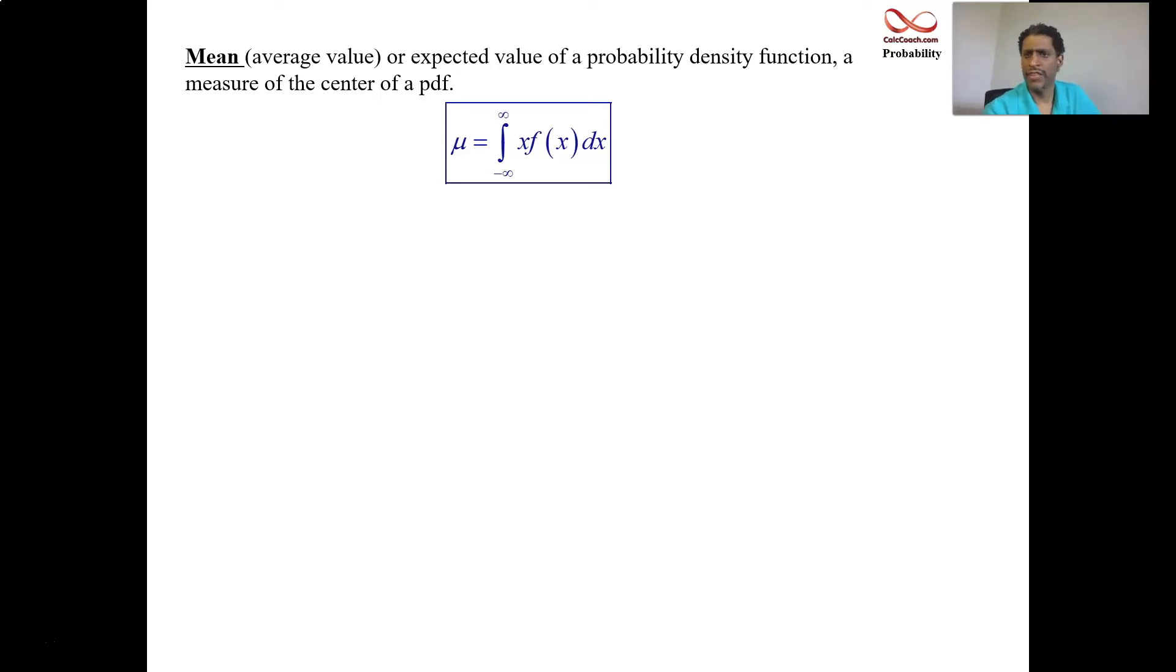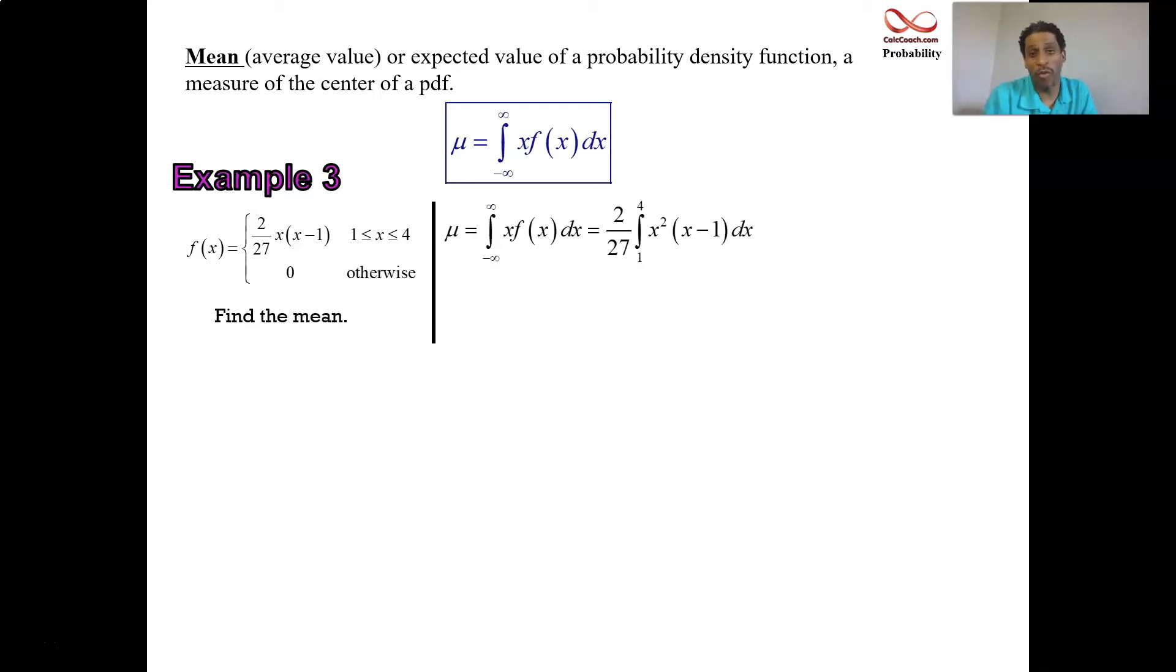Officially in this series, this is example number three. And it is going back to example number one and now calculating the mean for it. Example number one was just showing that this was a probability density function. Now our job is to calculate the mean for this probability density function. It's straightforward. We take this function, we multiply it by x. Technically, the integral says minus infinity to infinity, but the function is zero for most of that.